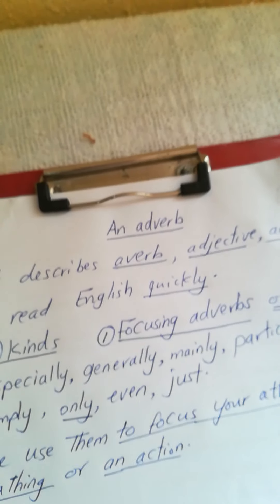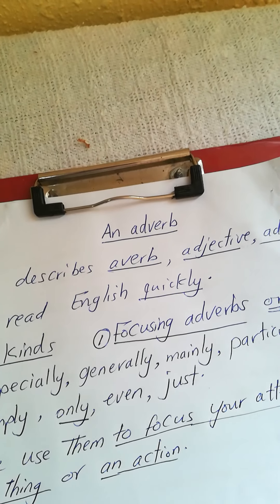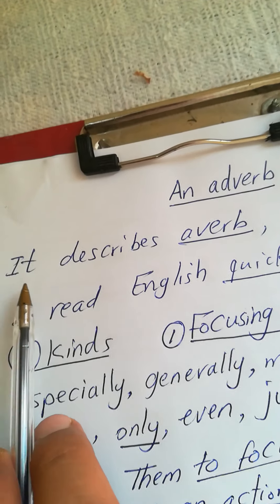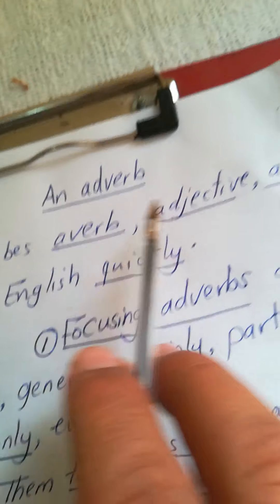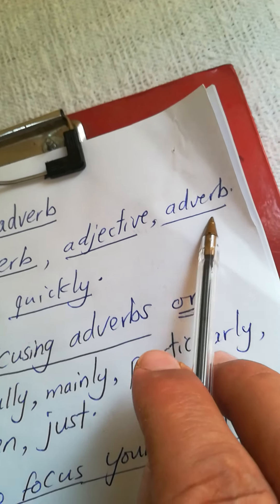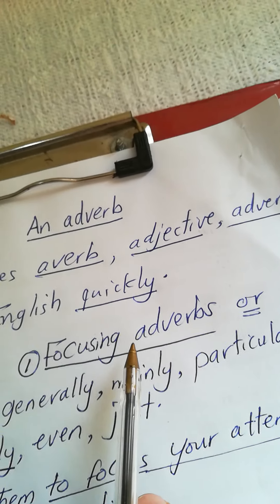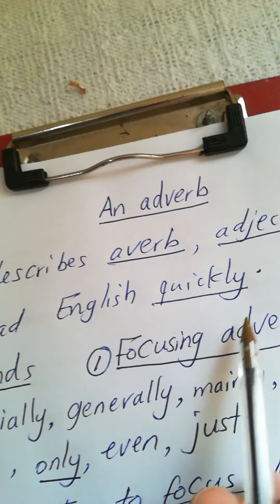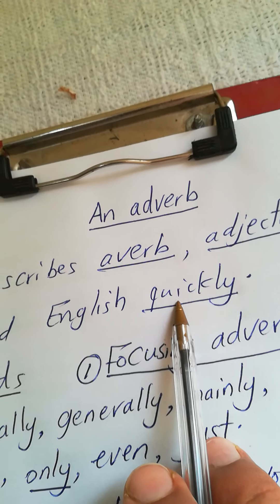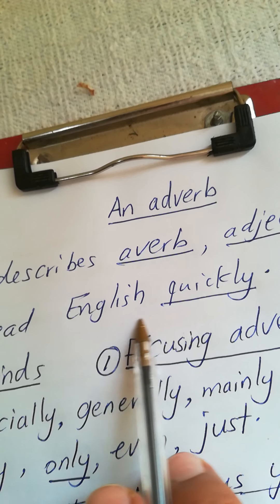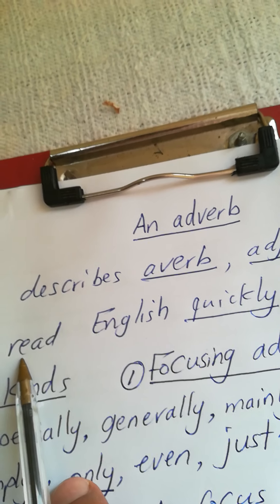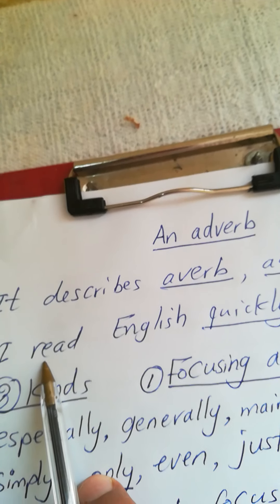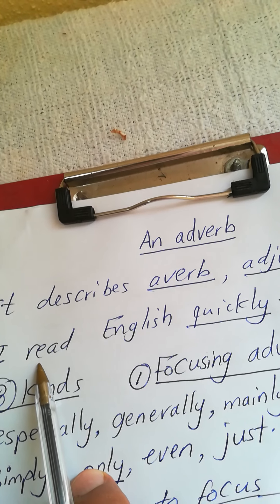Today my lesson is about adverbs in English. We should know what an adverb describes — it describes a verb, adjective, or another adverb. For example, I say 'I read English quickly.' Here, 'quickly' is an adverb of manner; it describes the verb 'read.' How can I read? I read quickly.